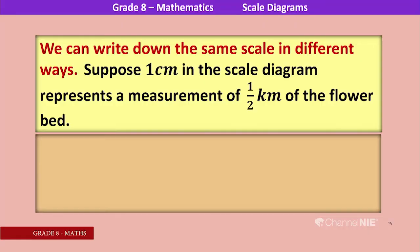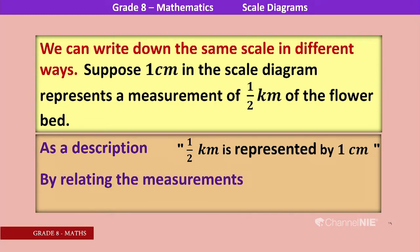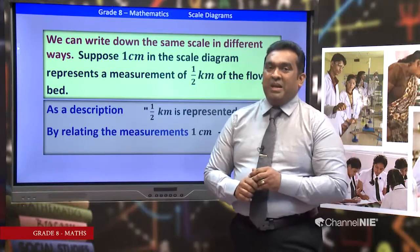Suppose 1 centimeter in the scale diagram represents a measurement of half a kilometer. As a description: half a kilometer is represented by 1 centimeter. As a relation: 1 centimeter arrow half kilometer — using an arrow to show the relation. In A-level classes you also use relations. To represent a relation, you use an arrow.